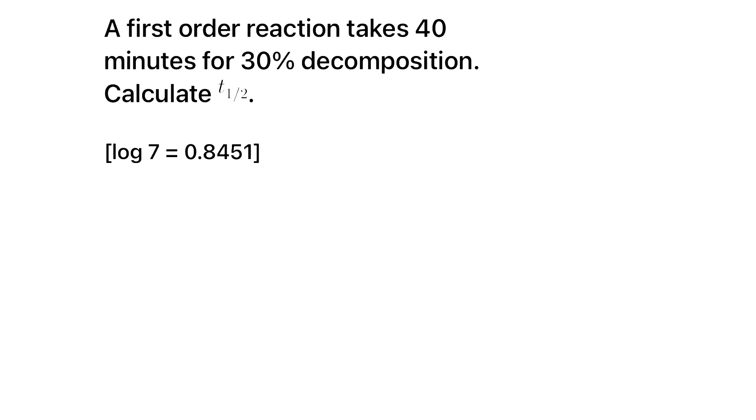See, for first order reaction, you know T half is what? T half is 0.693 by K. But we don't know K, right? So first you have to find K, then you can substitute that value here and you will get T half.